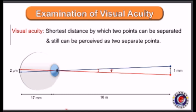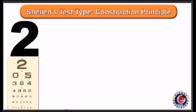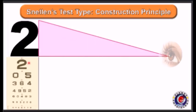This same principle is used in construction of Snellen's test type. Each individual letter in Snellen's test type is inscribed in a box which makes a visual angle of five minutes at a given distance. The thickness and other parameters of the letter make a visual angle of one minute. The topmost letter makes these angles at a distance of 60 meters.